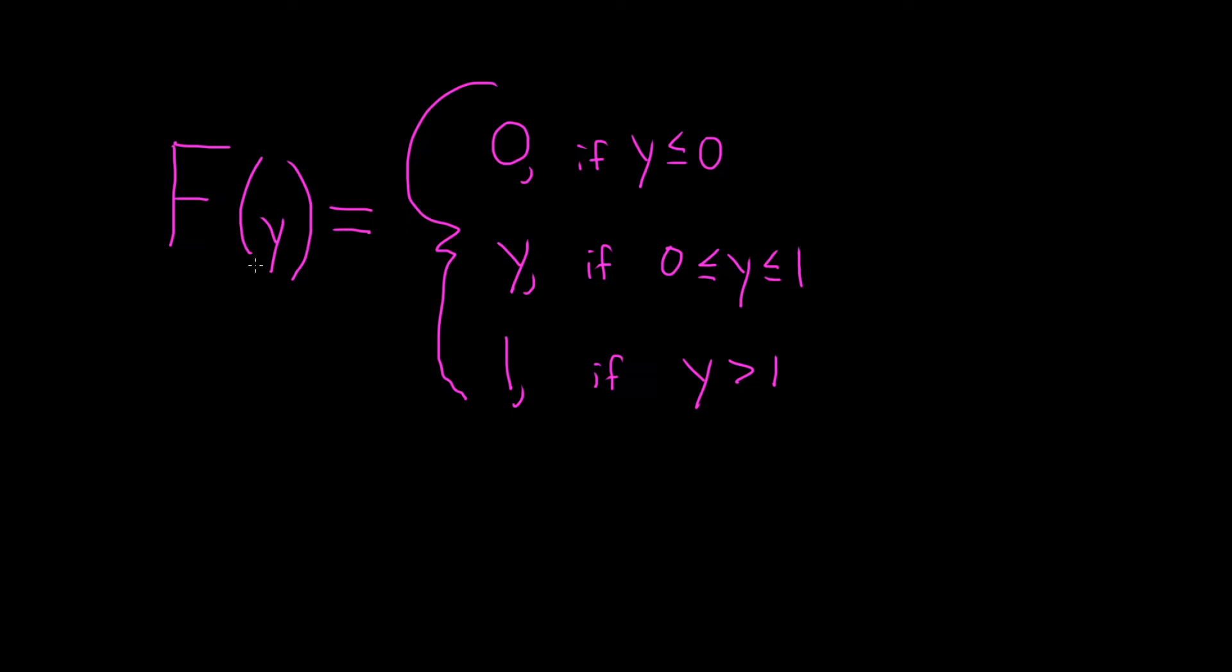In this problem we have a probability distribution function and we have to find the probability density function. This here big F is our distribution function and it's a probability distribution for the random variable capital Y. This defines it in terms of values of little y. So we want to find the probability density function.